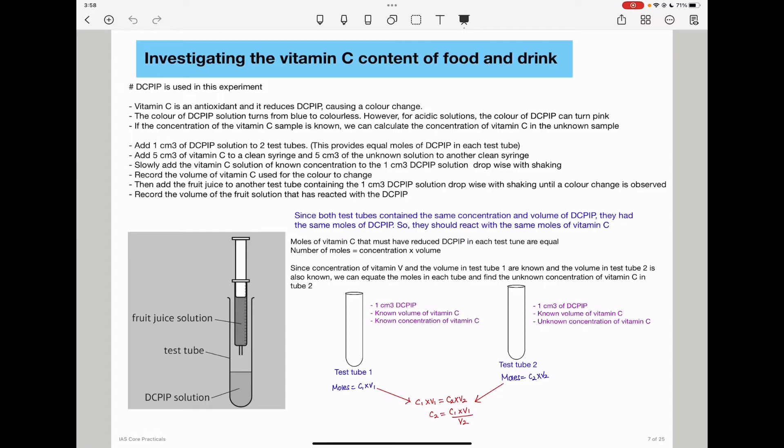In this experiment, DCPIP solution is used. We need to know that vitamin C is an antioxidant and it reduces DCPIP, causing a color change. When DCPIP is reduced, the color can change from blue to colorless.